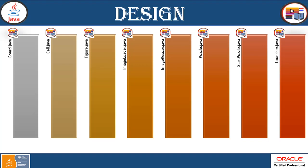The tiles will be shuffled, which is handled in Figure.java. ImageLoader uses JFileChooser from the Swing GUI to upload the image and create the puzzle. ImageResizer and Puzzle.java handle creating and shuffling the image tiles. The puzzle can be paused and resumed. Launcher is the main driver — it creates an instance of Puzzle.java and starts the entire structure and components of the game application.